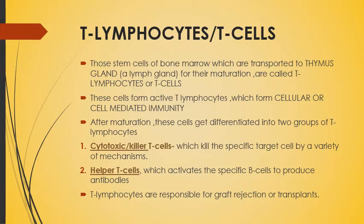Next are T lymphocytes or T cells. Those stem cells of bone marrow are transported to the thymus, one of the lymph glands, where they mature. So the name T lymphocytes comes from the thymus. These cells form active T cells which attack directly, forming cellular or cell-mediated immunity because they target cells that are going to be infected.